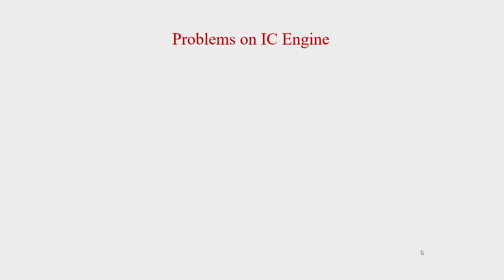We will continue our discussion on IC engines. Today we will work out a few examples from the different topics discussed in the last couple of lectures. We have covered the basic difference between spark ignition and compression ignition engines, then four-stroke and two-stroke engines.